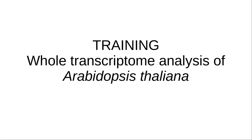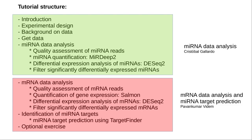Hello everybody. In this training you are going to carry out the analysis of the transcriptome of the model organism Arabidopsis thaliana. The ultimate goal of this tutorial is the identification of potential elements belonging to the brassinosteroids-mediated gene-regulatory network. The tutorial is divided into two blocks. In the first one, we will explore the steps necessary to perform the analysis of microRNA transcripts. In the second block, we will carry out the analysis of the total transcripts, as well as the target identification.